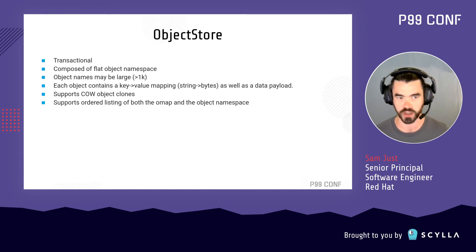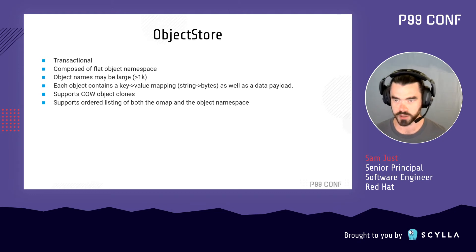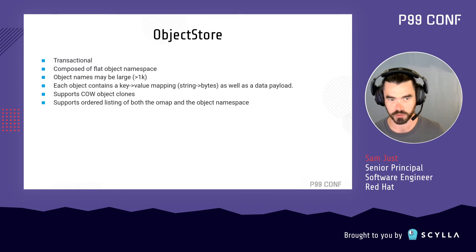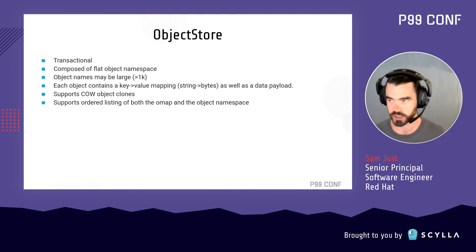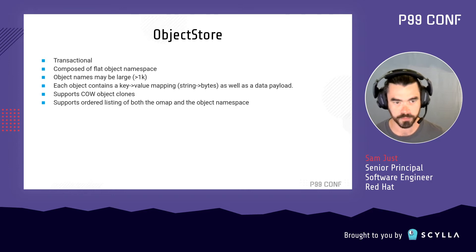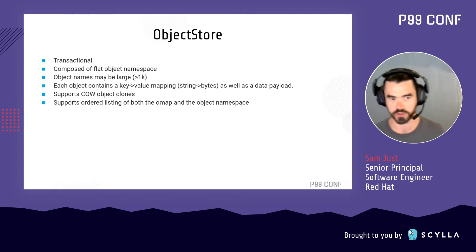ObjectStore has some properties. First, it's transactional — writes are transactional and may span multiple objects. Objects are in a flat namespace, but the object names may be large, particularly for RGW where they are under the control of the S3 client. Each object contains two basic elements: a mutable data payload used for file, block, or object data, and an ordered key-to-value mapping used for CephFS directories, RGW bucket indices, and miscellaneous metadata for RBD. Moreover, these objects may be arbitrarily cloned with copy-on-write semantics, and the backend needs to support efficient ordered listing of both OMAP keys and objects.